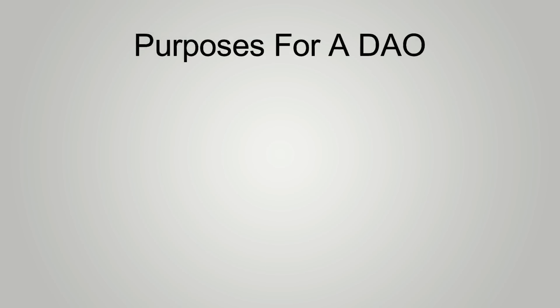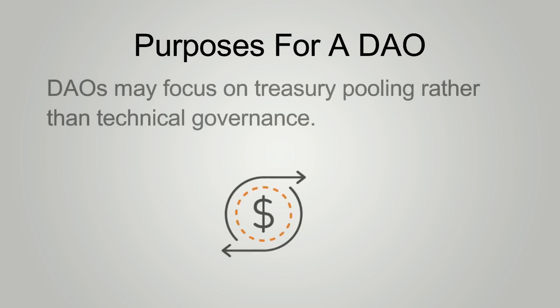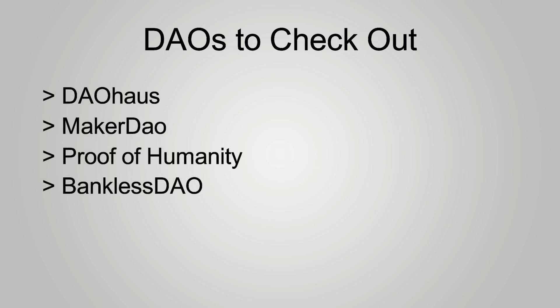DAOs that focus more on treasury pooling and allocation rather than technical governance, such as SharkDAO, may be more interested in facilitating the pooling of individual token holders' funds and using it to acquire rare NFTs, which may be too expensive for one member to buy alone. Some DAOs to check out are DAO Haas, MakerDAO, RaidGuild, Proof of Humanity, and BanklessDAO.